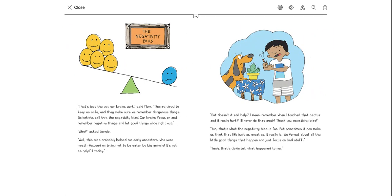That's just the way our brain works, said mom. We're wired to keep us safe and make sure we remember dangerous things. Scientists call this the negativity bias. Our brains focus on and remember negative things and let the good things slide right out. Why? asked Sergio. Well, this bias probably helped our early ancestors, who were mostly focused on trying not to be eaten by big animals. It's not as helpful today. But doesn't it still help? I mean, remember when I touched a cactus and it really hurt? I'll never do that again. Thank you, negativity bias.